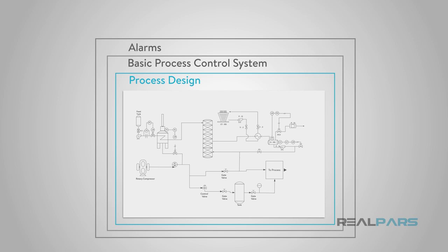In the process design, care is taken to specify lines, equipment, and valves with the right sizes, materials of construction, and proper accessories. The basic process control system is installed with the appropriate instruments, controls, and monitoring logic to allow the plant to be operated within the safest ranges for pressure, temperature, and flow rate.